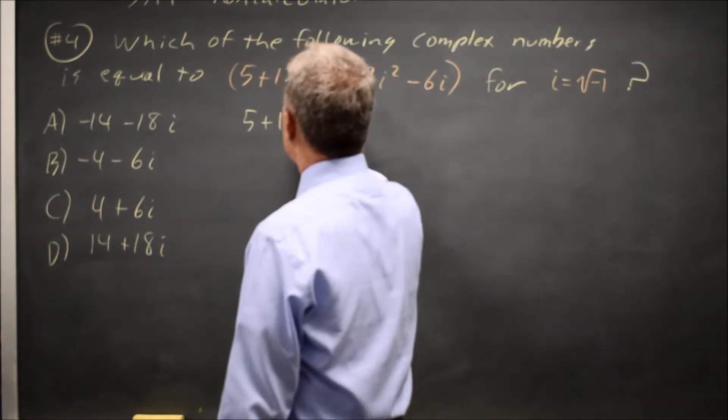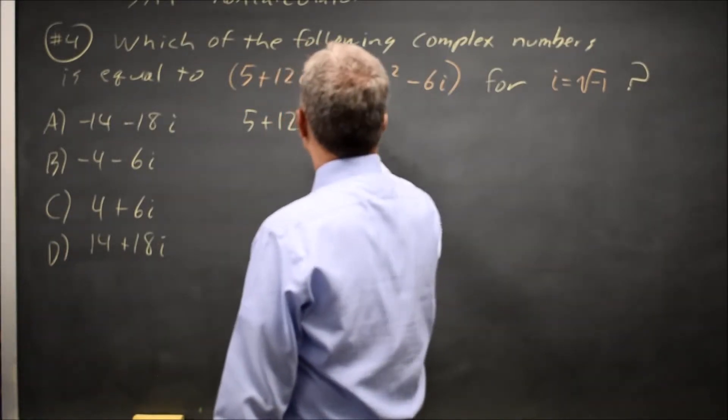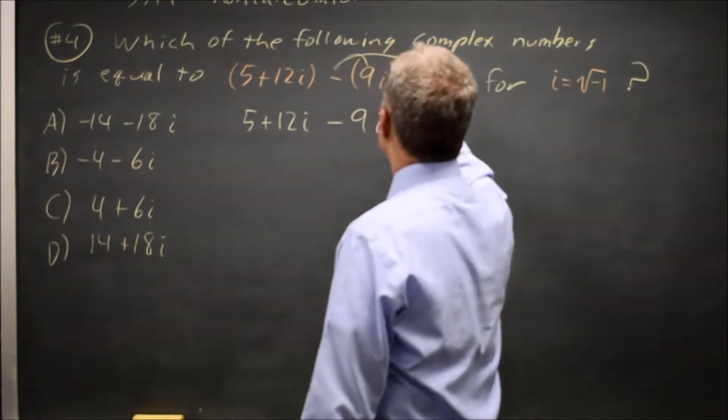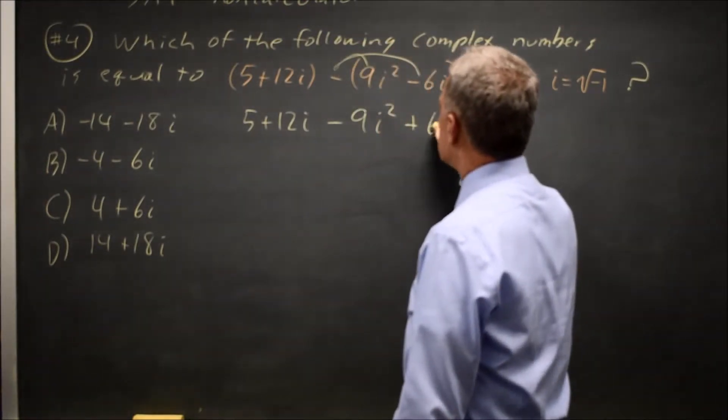I have five plus twelve i. Distributing the negative is minus nine i squared, and then minus a negative is plus six i.